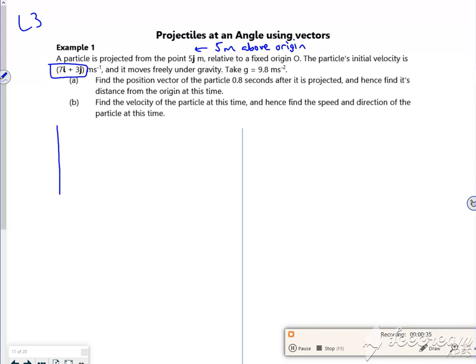So if I draw a little picture for it, it gets fired up and then it lands. So it's starting off 5 metres above.